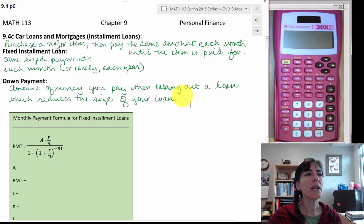A down payment is some amount of money that you pay when you're taking out a loan which reduces the size of your loan, which could then also reduce the size of your payments or the amount of time that you have before you paid off your house or your car.